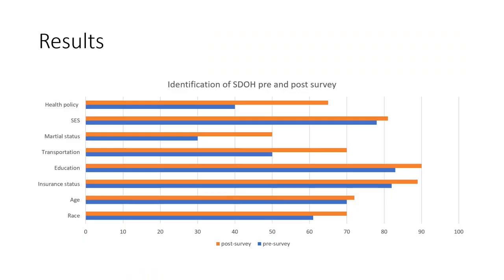Moving on to results, this graph shows the identification of social determinants of health pre- and post-survey. The pre-survey data is shown in blue and post-survey in orange. Most residents already identified race, age, insurance status, education, and socioeconomic status correctly as social determinants of health. However, post-education, significantly more residents were able to correctly identify transportation, marital status, and health policy as social determinants of health.